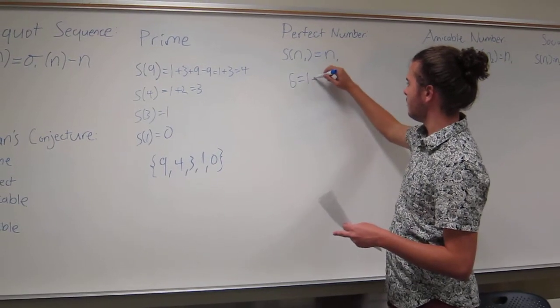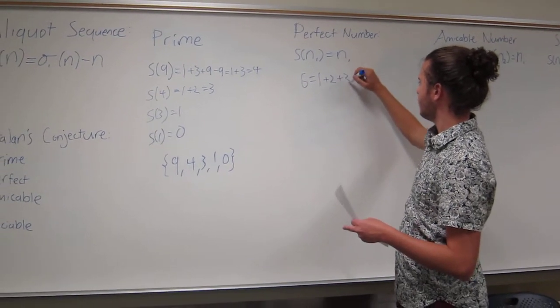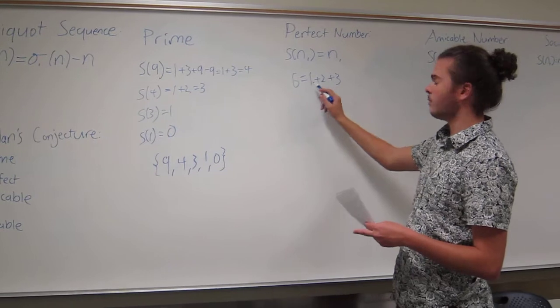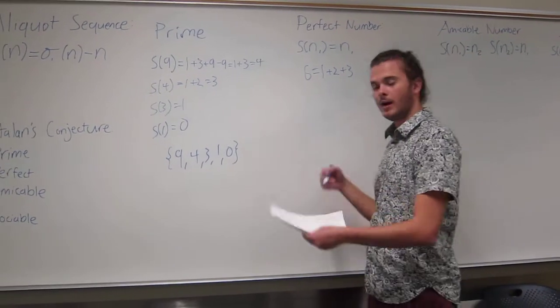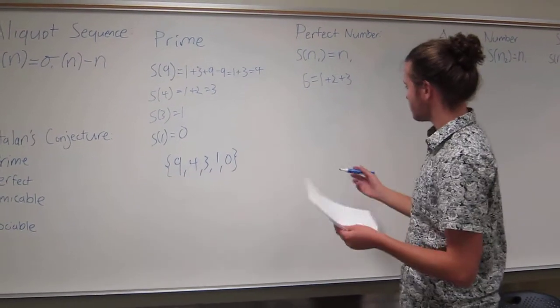Divisors of 6 are 1, 2, 3, don't include 6, and then 1 plus 2 plus 3 is equal to 6. Now let's apply that to an aliquot sequence.